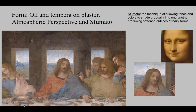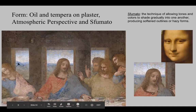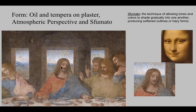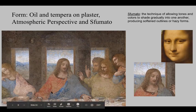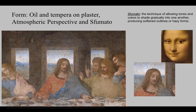Leonardo uses atmospheric perspective — things get hazier as they move into the distance. He also uses sfumato, a hazy smoky quality in how he shades figures, creating soft edges rather than crisp lines as seen in Botticelli's work. He applies this not just to backgrounds visible through the windows but to the modeling of the figures as well. You can see this smoky characteristic very clearly in a close-up of the Mona Lisa.